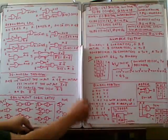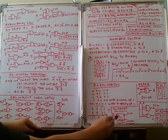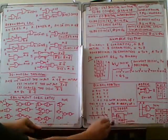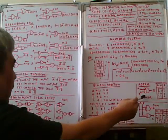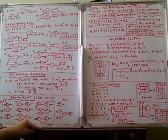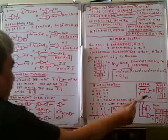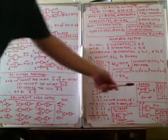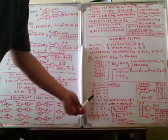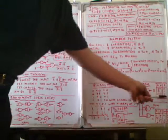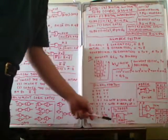Binary addition leads us to the half adder circuit. The half adder has inputs A and B, and outputs Sum and Carry. The Sum is computed by the XOR gate: when A is 0 and B is 0, output is 0; A 0 B 1 gives 1; A 1 B 0 gives 1; A 1 B 1 gives 0. This matches binary addition results.